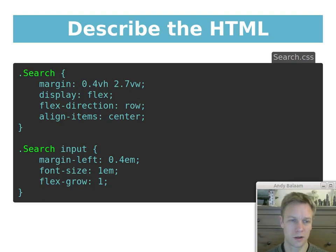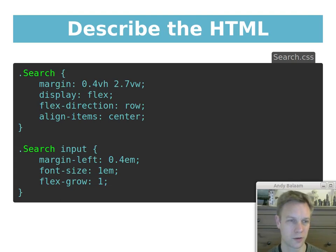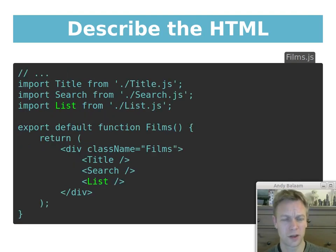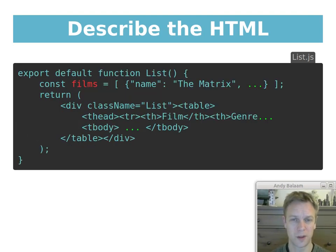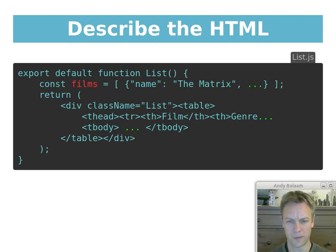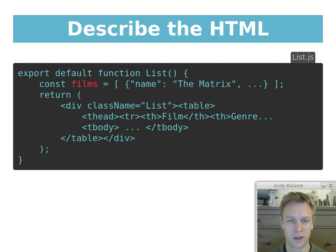The search CSS file applies styles to the HTML components defined in search.js — those had className equal to search, which in HTML becomes class equal to search, and the CSS applies to that class. Now let's look at List, which is a slightly more complicated component. Again, a component is just a function — this one called List. I've pretended we got some films from a search request, but actually I've just put them in a constant array at the top.